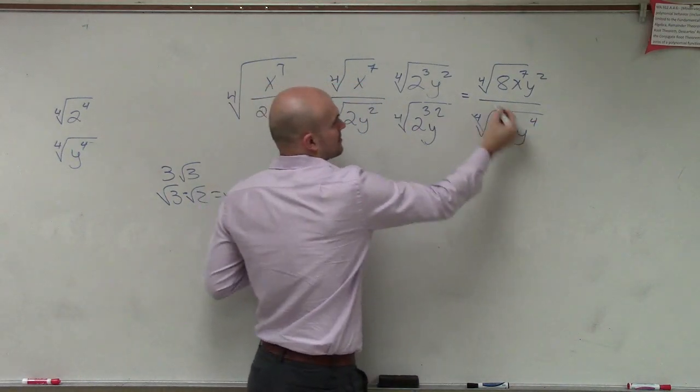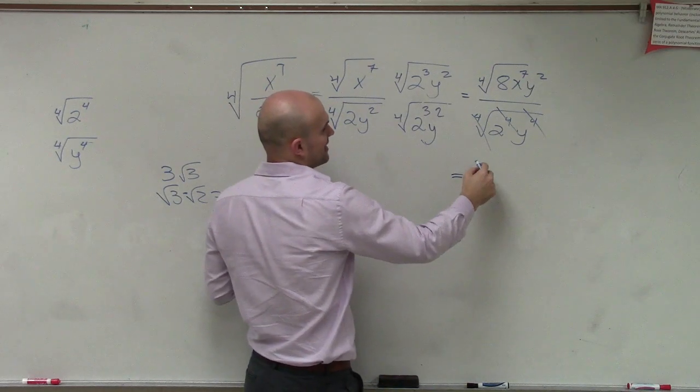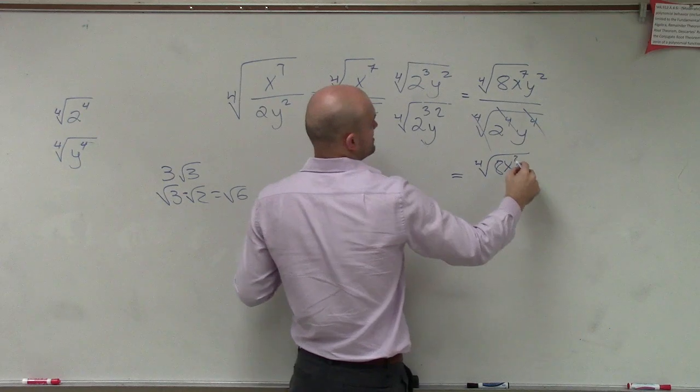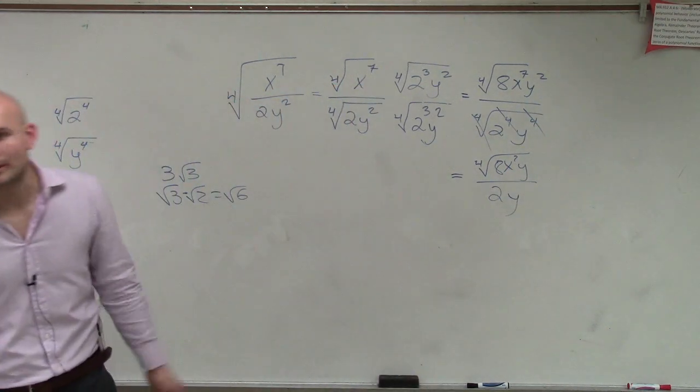Now you guys can see those all now undo each other. So my final answer, 8 x to the seventh y over 2y. And there's no more root on the bottom.